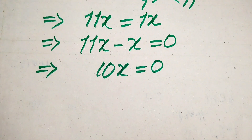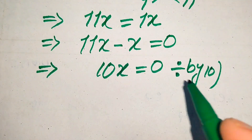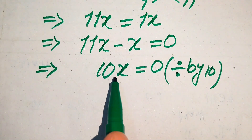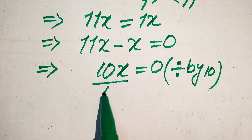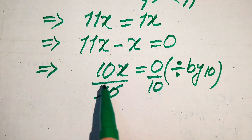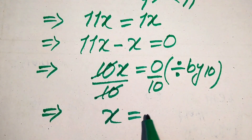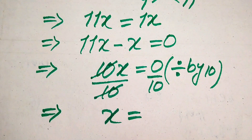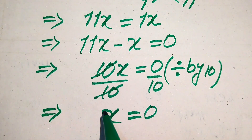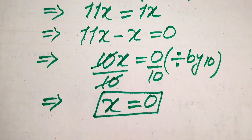Since we are solving for x, we divide both sides by 10 to remove the 10 from the left hand side. The 10 cancels out and we get x equals 0 divided by 10. We know that 0 divided by any number is always 0. So in the first method we get the root of the given equation as x equals 0.